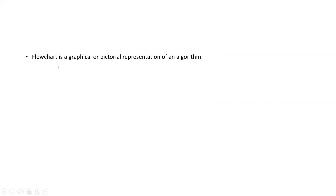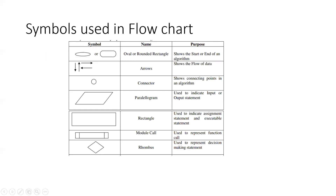Now let us see what is the flowchart. A flowchart is a graphical or pictorial representation of an algorithm. These are the symbols used in a flowchart: an oval represents the start or end of the algorithm; arrows represent the flow of data; a circle is a connector showing connecting points in an algorithm; a parallelogram is used to indicate input or output statements; a rectangle indicates assignment and executable statements representing processes inside the computer; a double-sided rectangle represents a function call; and a rhombus or diamond represents the decision-making statement.